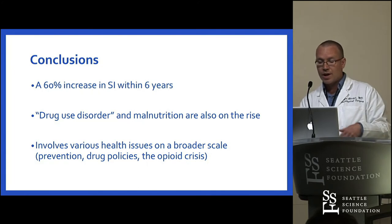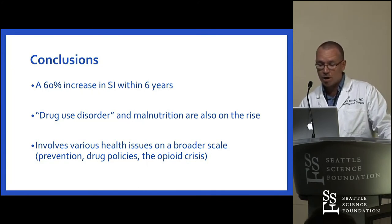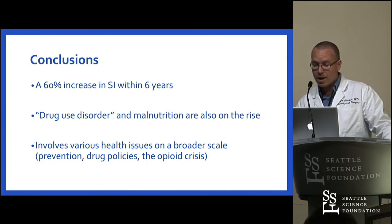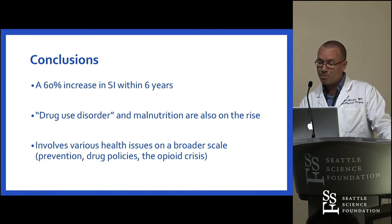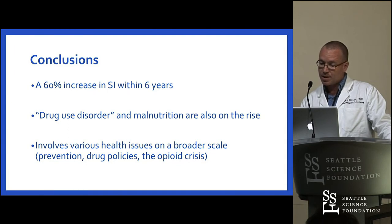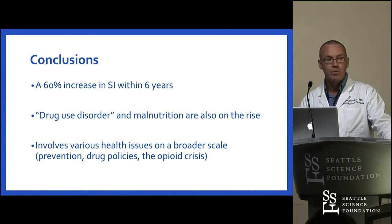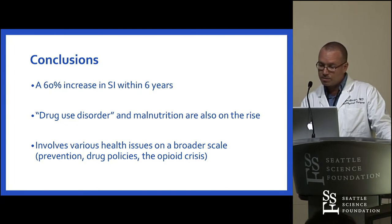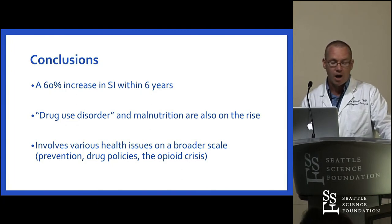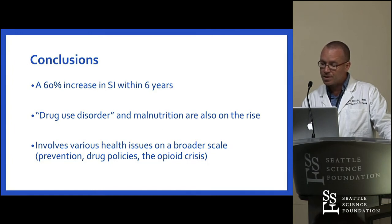To conclude, we show that the proportion of spine infections among discharged patients had increased by 60%, and that both drug abuse and malnutrition are also on the rise. Does this represent the trigger for the rise in spine infections? There's no good answer because it's not a true incidence and prevalence study — it's based on discharged patients — but we definitely show a rise in proportion, and it's pretty dramatic. This should obviously encourage a deeper analysis on a broader scale.